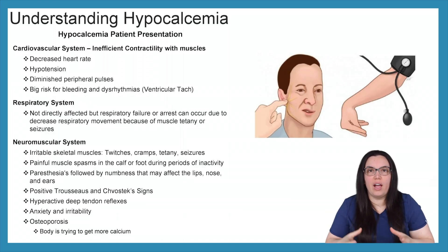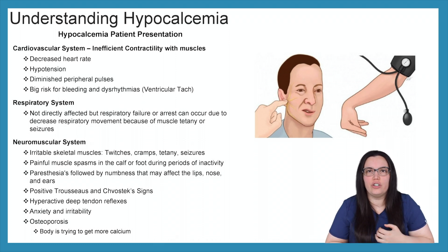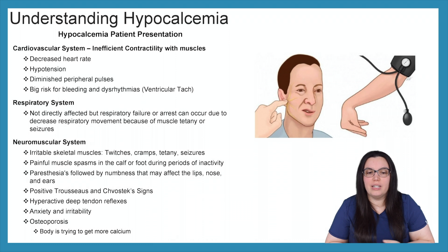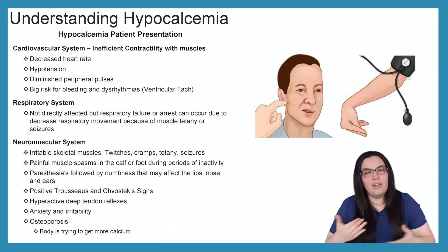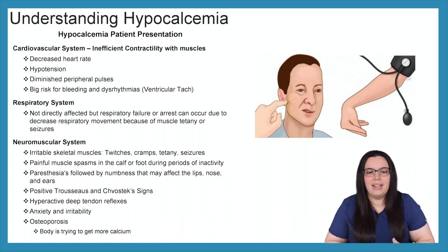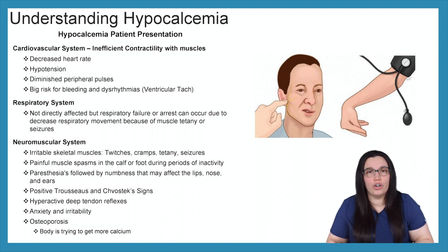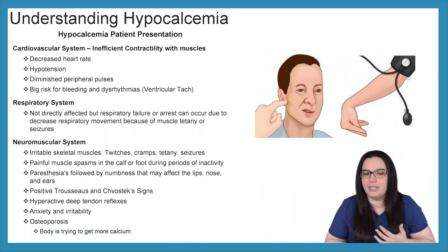Now that we understand some causes, what is the patient going to look like? When it comes to the cardiovascular system, we're going to have inefficient contractility of our muscles because we don't have enough calcium. You're going to see decreased heart rates, hypotension, decreased peripheral pulses, and a big risk for bleeding and dysrhythmias such as ventricular tachycardia. The respiratory system can ultimately fail or arrest due to decreased respiratory movement because of muscle tetany or seizures from low calcium. When it comes to the neuromuscular system, we're going to have irritable skeletal muscles — increased twitching, cramps, tetany, and seizures.